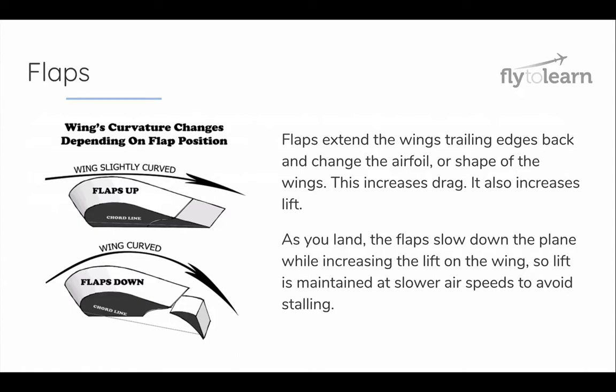Flaps extend the wings' trailing edges back, changing the airfoil, or shape, of the wings. This increases drag. It also increases lift, which is important so that you don't fall out of the sky. As you land, the flaps slow down the plane while increasing the lift on the wing, so lift is maintained at slower airspeeds to avoid stalling.